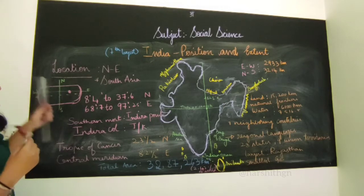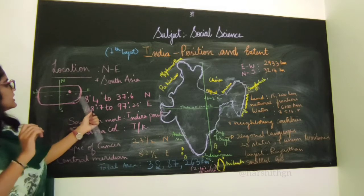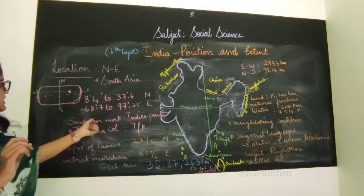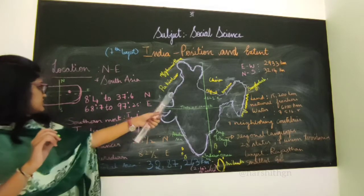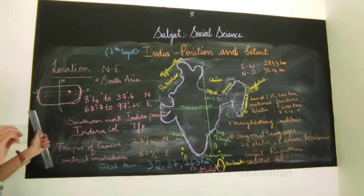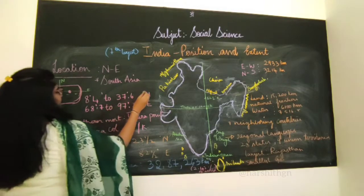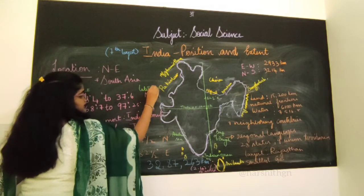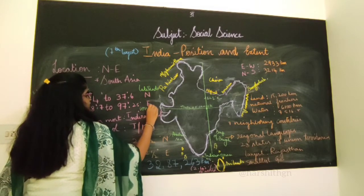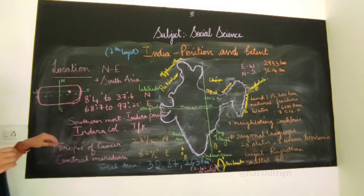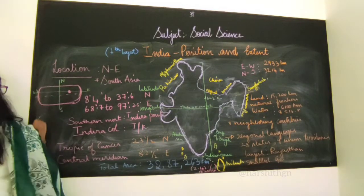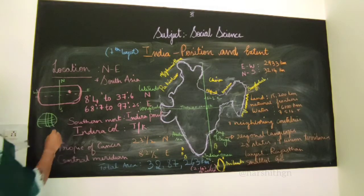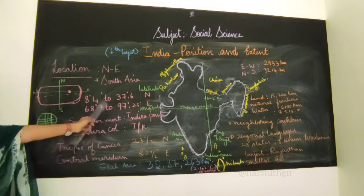India lies from 8 degrees to 37 degrees in the north, and 68 to 97 degrees in the east. This covers the latitude and longitude range. Around this point on the map, India lies.